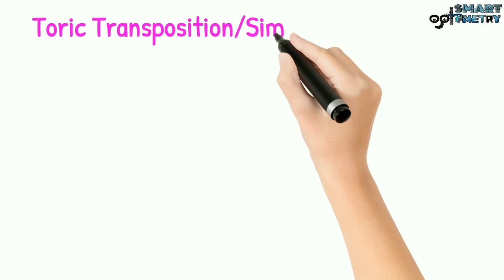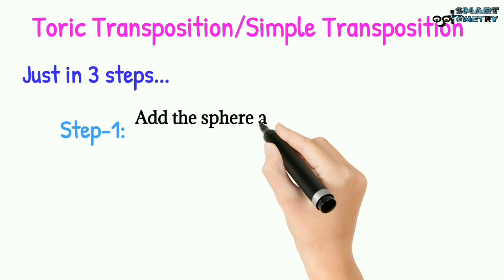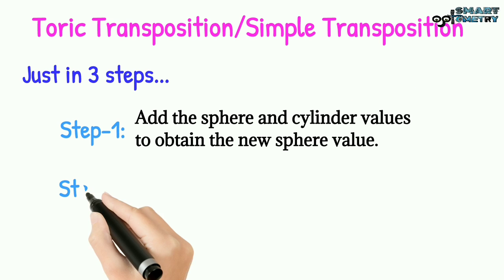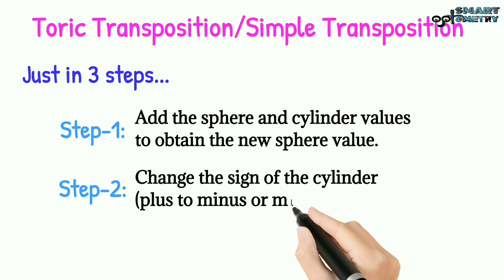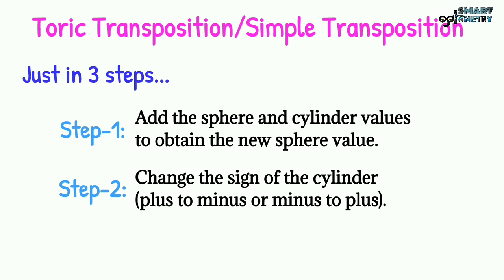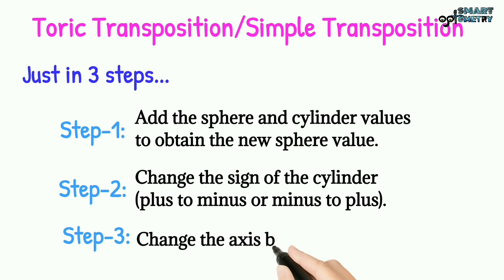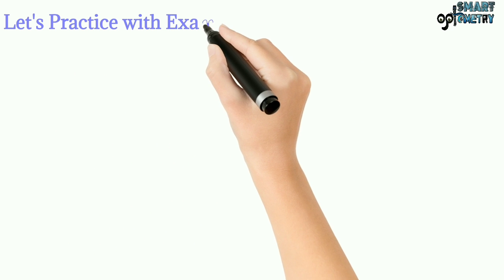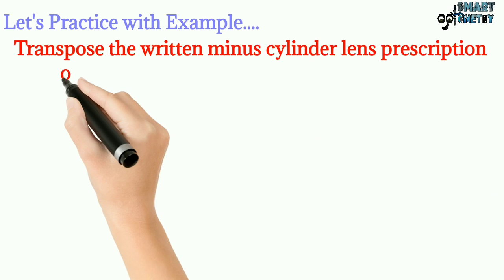Today we will discuss toric transposition, or simple transposition, in just three simple steps. Step one: add the sphere and cylinder values to obtain the new sphere value. Step two: change the sign of the cylinder — if it is plus, change to minus; if it is minus, change to plus. Step three: change the axis by 90 degrees.